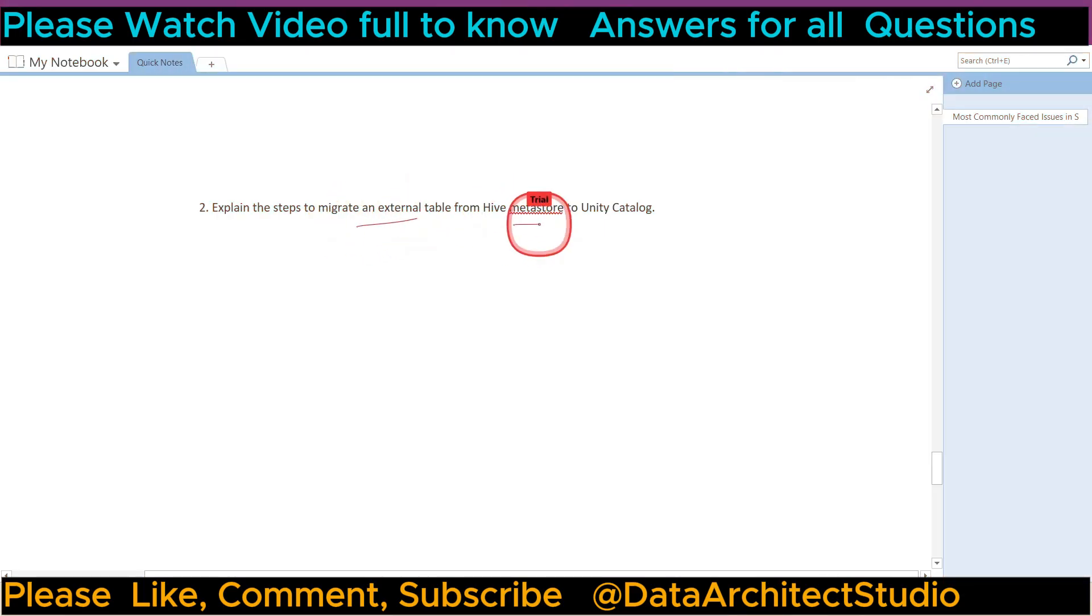Second question: explain the steps to migrate an external table from Hive metastore to Unity Catalog. So we can also ask the question like how you can migrate the non-Unity Catalog enabled table to Unity Catalog enabled table. Okay, so there are two tables available that everyone knows: one is managed table and external table. So in case of external table we need to follow certain steps. So the first step is we need to create the IAM rule for the storage account, okay, storage account in case of Azure.